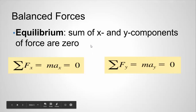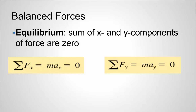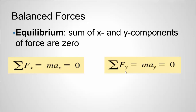When we talk about the sum of forces in each direction being zero, we have to break our forces into x and y components. Sigma means the sum of. The sum of forces in the x direction equals mass times acceleration in the x direction, and since acceleration is zero, that equals zero. In the y direction, the same is true — the sum of all forces in the y direction equals mass times acceleration in the y direction, and that is also equal to zero.